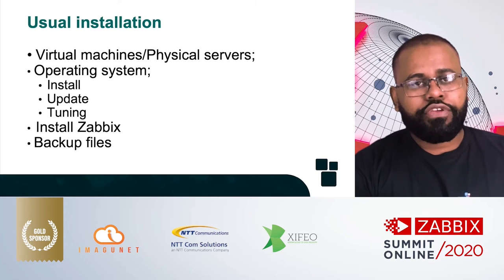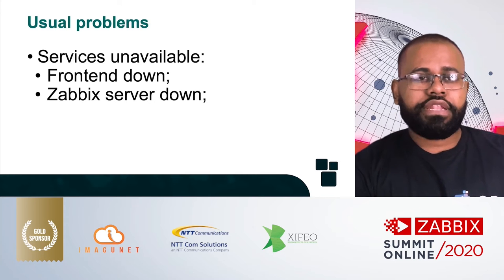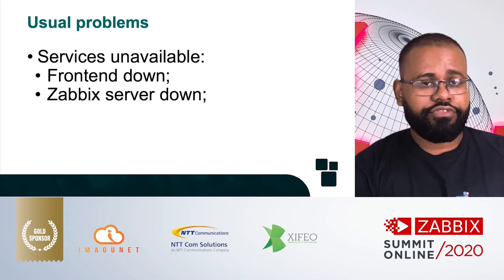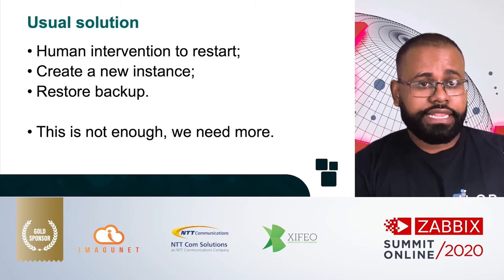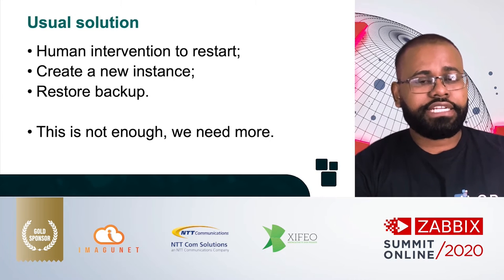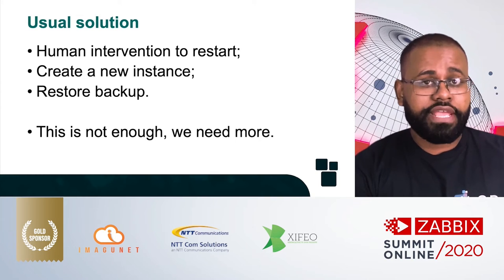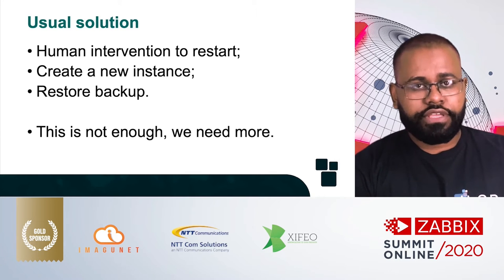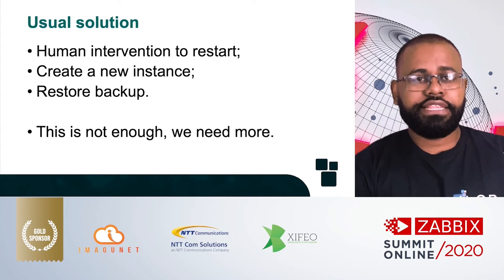We must install Zabbix and configure the backup of the configuration files and the databases. However, there are some known issues with this type of installation. For example, when we have an unavailable service — Zabbix service down, frontend down — what do we need to do to fix this problem? The usual solutions require human intervention to restart a service, restart a server, and in some cases create a new instance or even restore the backup. This is not enough — we don't need to assign someone to basic actions like this. The services must be able to restore themselves.